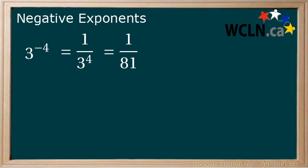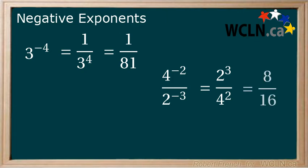Now let's look at one that is a little more complicated. 4 to the power of negative 2 over 2 to the power of negative 3. Same rules apply and we can flip them over the fraction line to make them positive and now we have 2 to the power of 3 over 4 to the power of 2 which we can evaluate here.